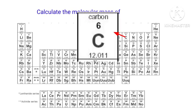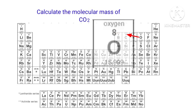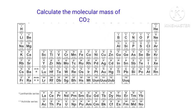The atomic mass of carbon is 12.011. The atomic mass of oxygen is 15.999. In a carbon dioxide molecule, there is one carbon atom and two oxygen atoms present.